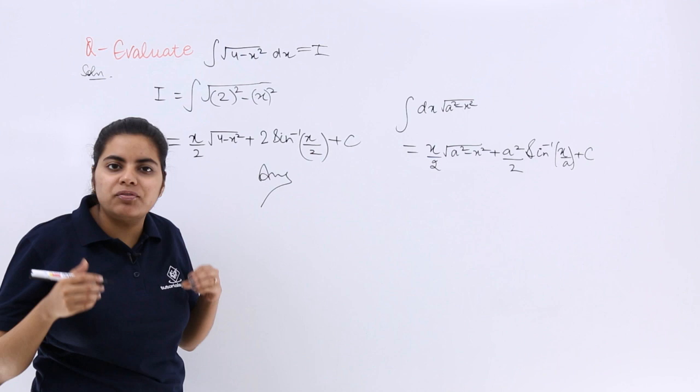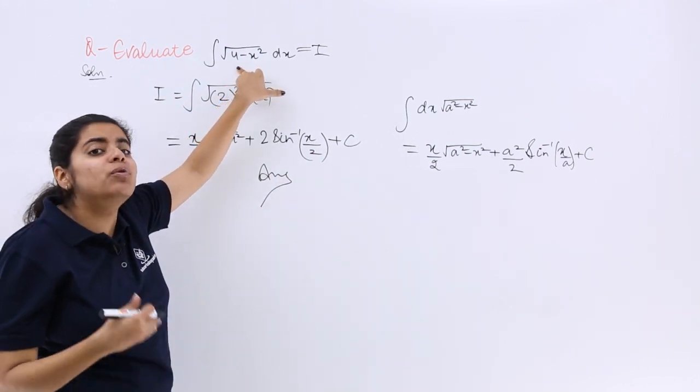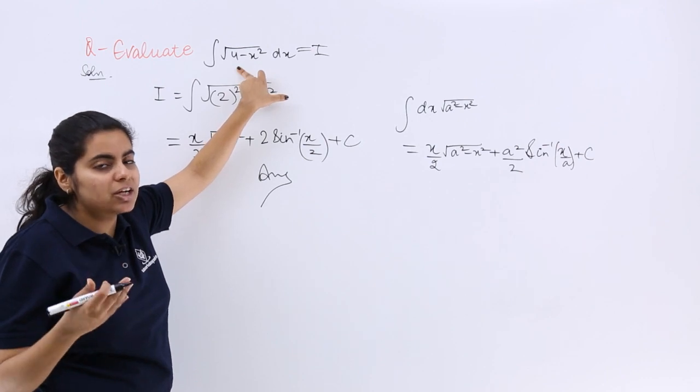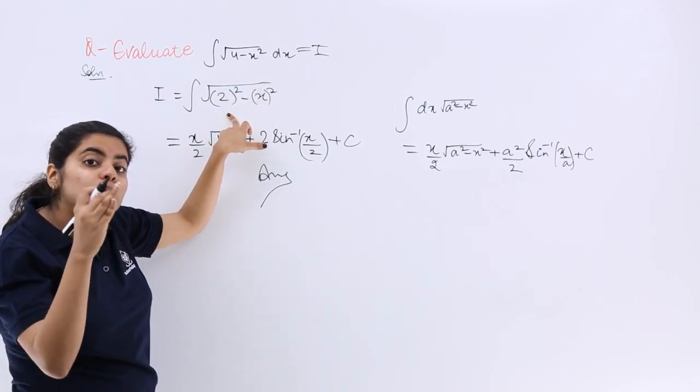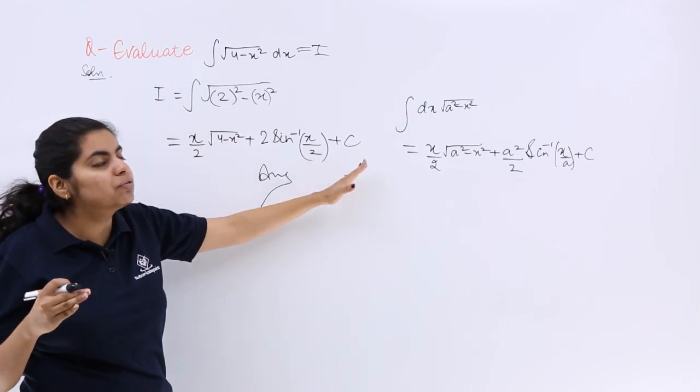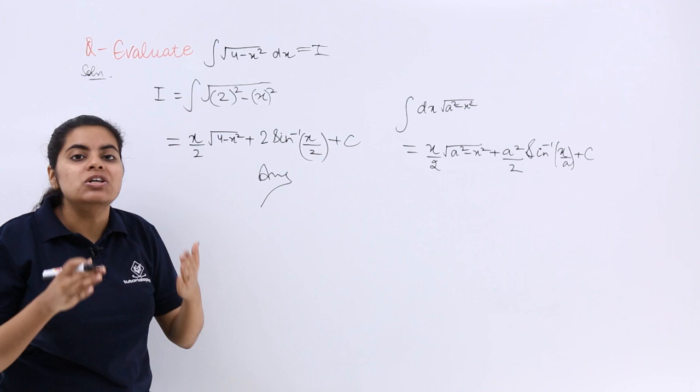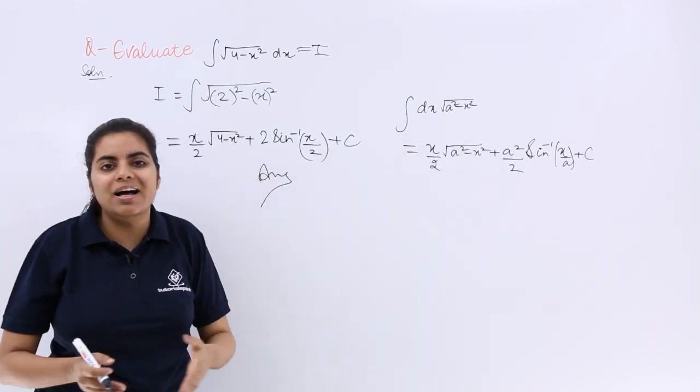Now if in this question, although this is complete here, it was not 4 but 4 upon 3, means a fraction, then here also 4 upon 3 is there, means 2 upon under root 3 whole square, and you would have treated the further part of the solution like that. So you need to see what is your a and accordingly your answer would change.